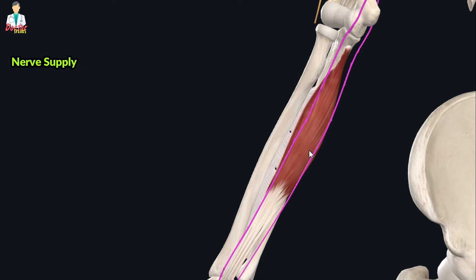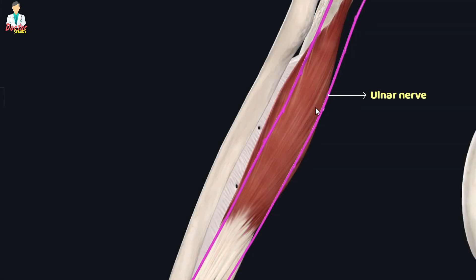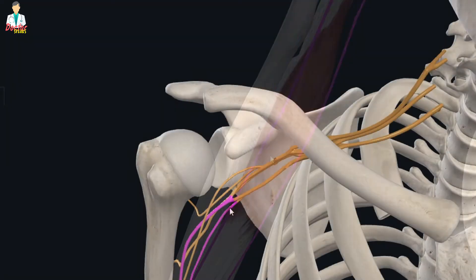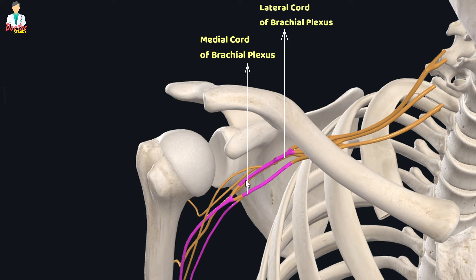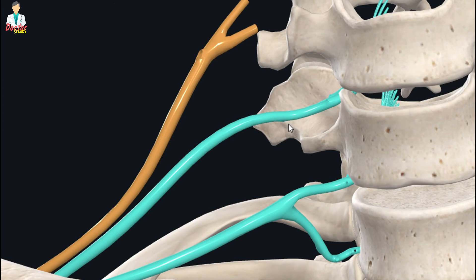The flexor digitorum profundus muscle receives its innervation from two nerves: the median nerve and the ulnar nerve. The ulnar nerve supplies the fibers of the medial half of this muscle, while the median nerve supplies the lateral fibers. The ulnar nerve arises from the medial cord of the brachial plexus, while the median nerve has its origin from both the medial and lateral cords of the brachial plexus.